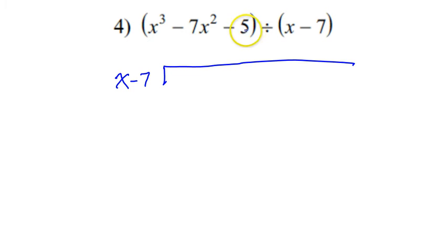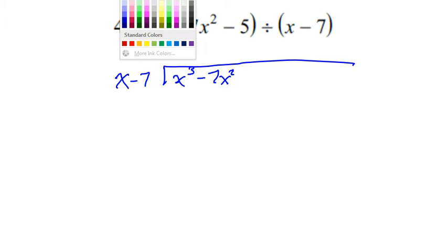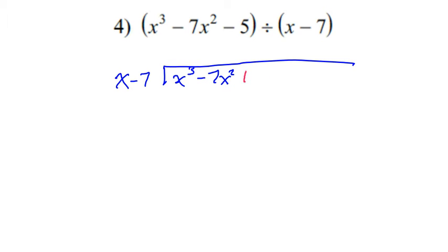Are there any missing terms I have to worry about? Yeah. Plus 0X. Yeah. The 0X. It goes from squared to the constant. So we do need a 0 term this time. So I'll have X to the third power minus 7X squared, and then we'll do plus 0X and then minus 5.